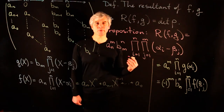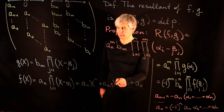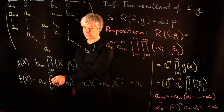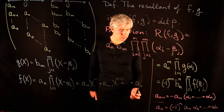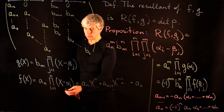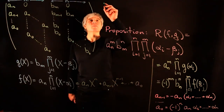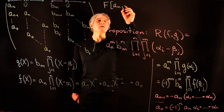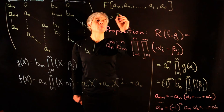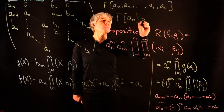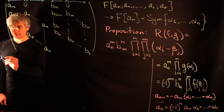Let us point out the form of Vietta's formulas for non-monic polynomials. The coefficient a_{n-1} equals the leading coefficient a_n times the sum of the roots with a negative sign, and the constant term equals a_n times the product of the roots times (−1)^n. Using Vietta's formulas, a polynomial in coefficients a_n, a_{n-1}, ..., a_0 may be transformed into a polynomial in the leading coefficient times a symmetric function in the roots α_1, ..., α_n.